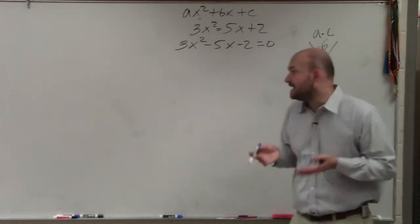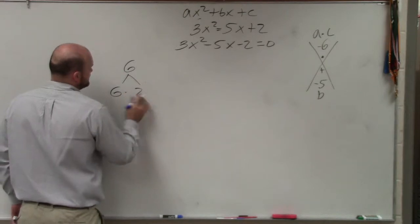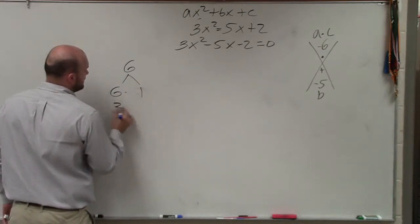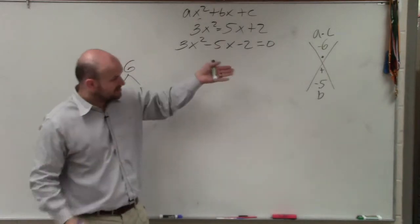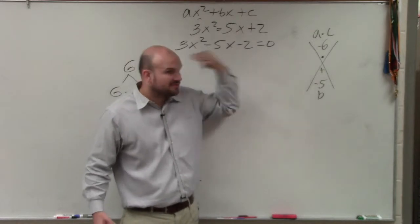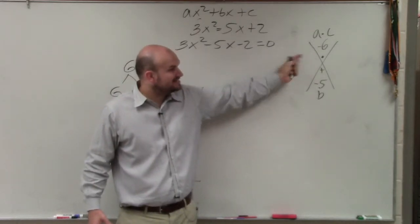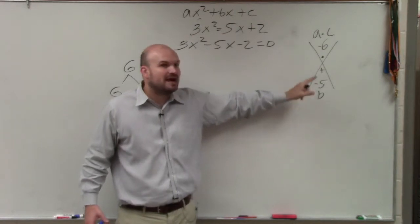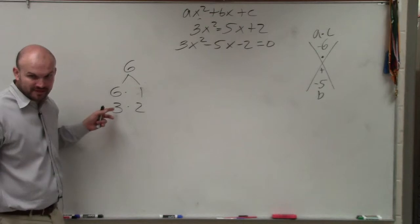So therefore, again, the main important thing is when you guys are thinking about these, you have 6 times 1 and 3 times 2. Now, the only reason why I'm writing this out is because I assume that majority of you guys can figure this out on your own. The main important thing is when you guys are thinking of these in your head, think about what two numbers multiply giving you a 6. They have to add to give you negative 5. If they're adding to give you a negative number, the larger factor has to be negative. Would that make sense?